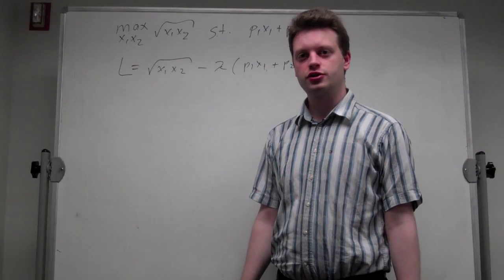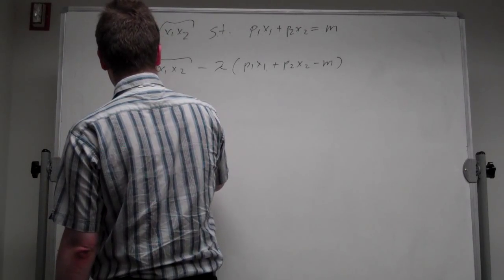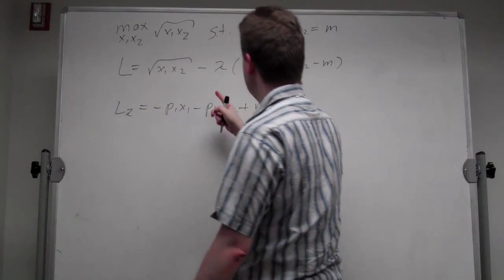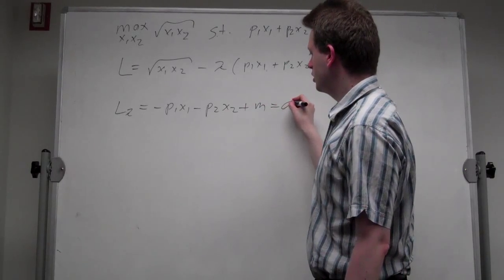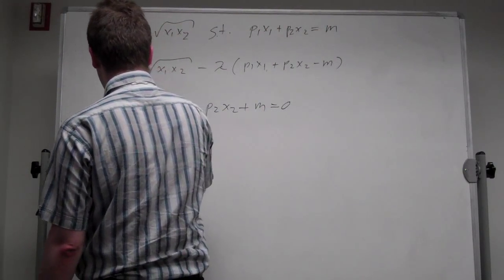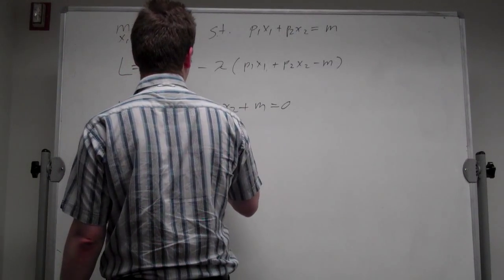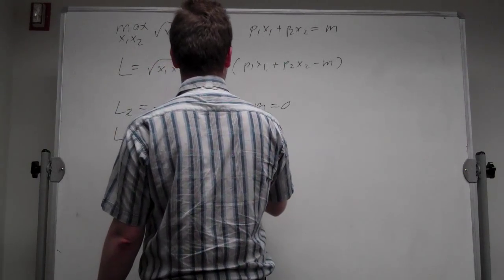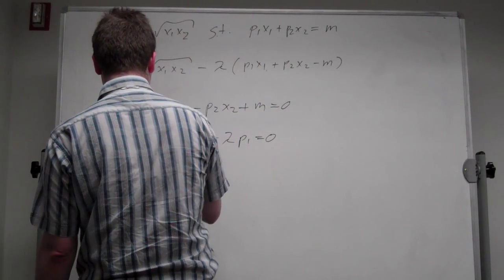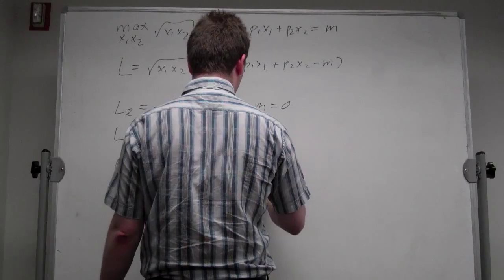Let's do the first order conditions, starting with lambda. The derivative with respect to lambda is equal to minus p1*x1 minus p2*x2 plus m. Note that there's a negative sign here, so you need to have the negative sign down here too, otherwise you will have issues with the second order condition. With respect to x1, it's simply (1/2)*x1^(-1/2)*x2^(1/2) minus lambda*p1 equals 0, and with respect to x2 it's (1/2)*x1^(1/2)*x2^(-1/2) minus lambda*p2 equals 0.